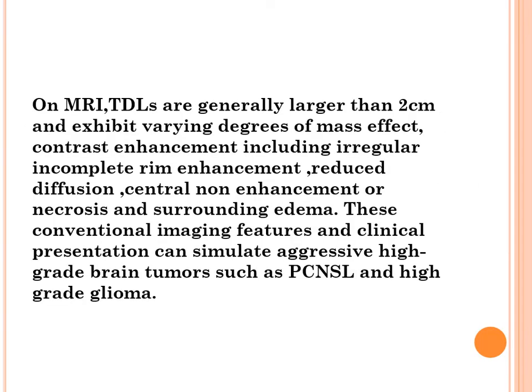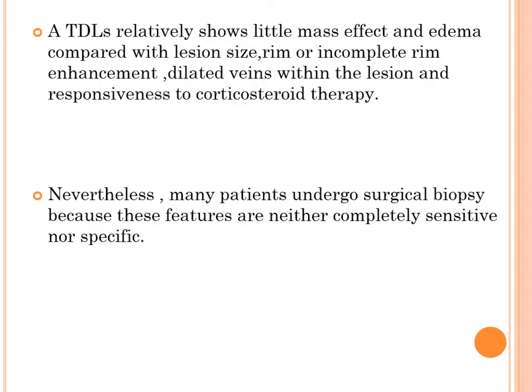On MRI, tumefactive demyelinating lesions are generally larger than 2 cm and exhibit varying degrees of mass effect and contrast enhancement, including irregular incomplete rim enhancement, reduced diffusion, central non-enhancement or necrosis, and surrounding edema. These features can simulate aggressive high-grade brain tumors. Tumefactive demyelinating lesions show relatively little mass effect and edema compared with lesion size, rim or incomplete rim enhancement, dilated veins within the lesion, and responsiveness to corticosteroid therapy.